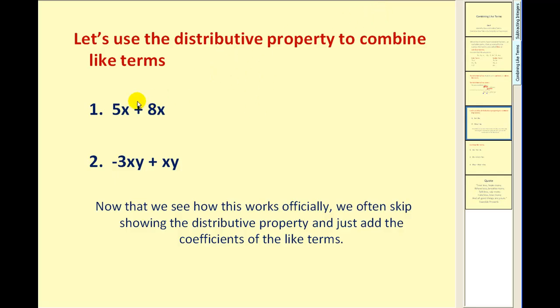Let's take a look at how we are going to use this. Let's use the distributive property to combine these like terms. We can see that these terms are like terms because they both have a factor of x in them. So if we factored out the x, we would be left with five plus eight.